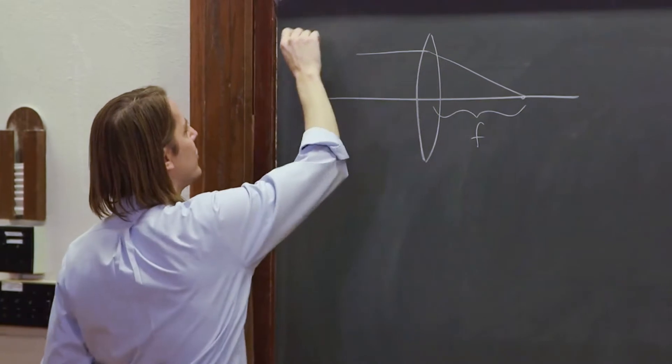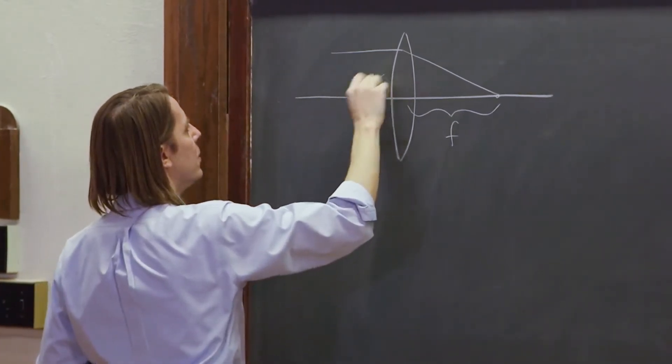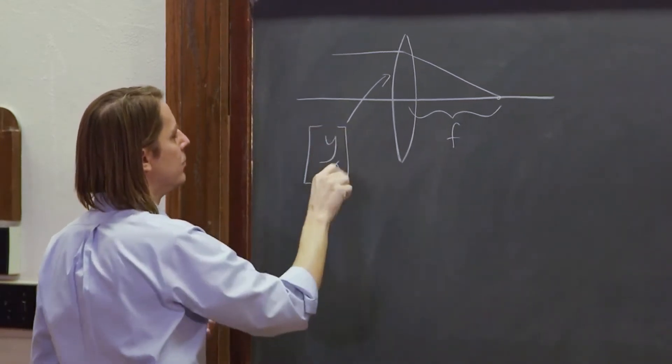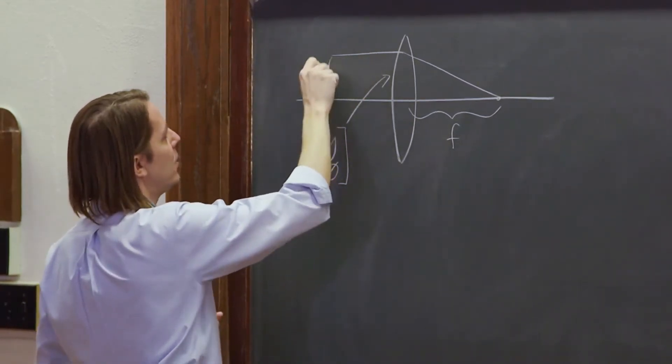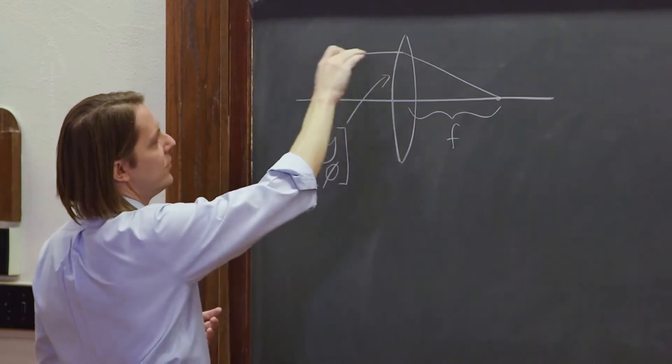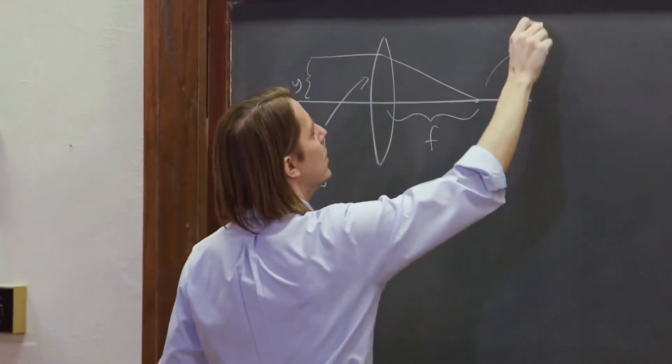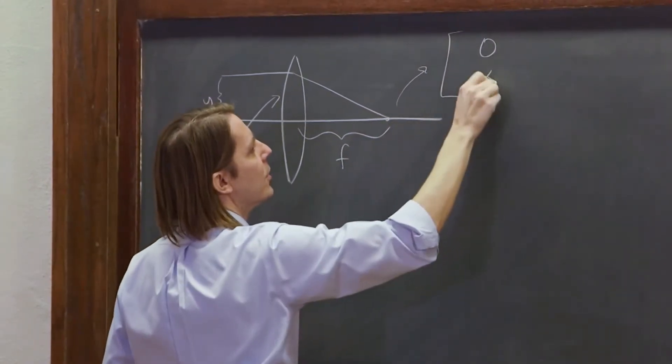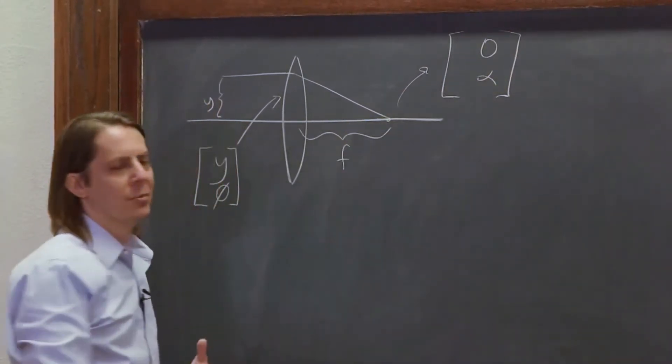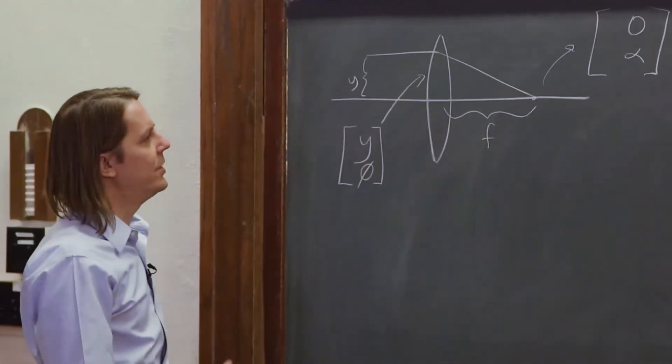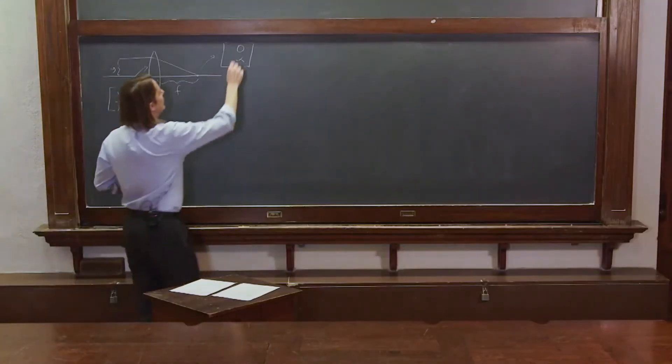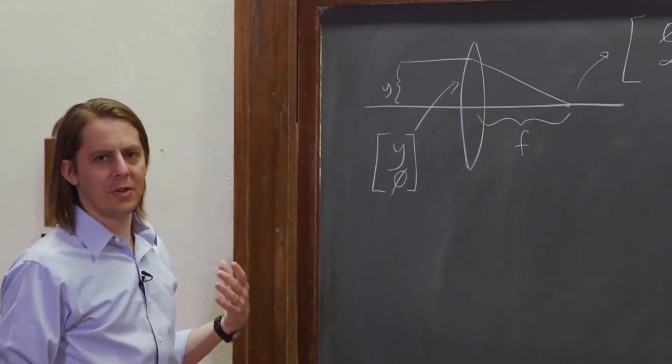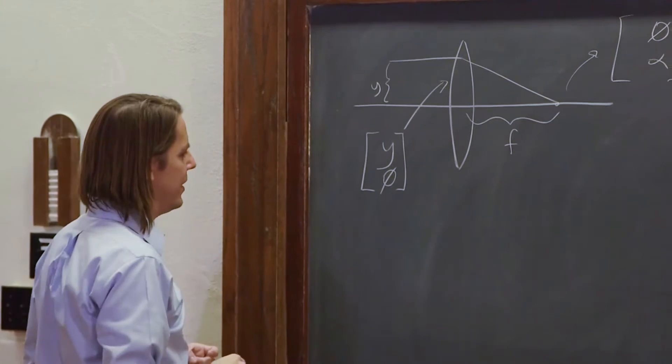We can do that by saying we're going to start out here with the matrix y, 0, because this is some height y and it's at zero angle. And then we're going to end up here with a vector 0 and then some angle alpha. You can see the way we drew it, it's actually going to be a negative angle below the horizontal. From y, 0 to 0, alpha.